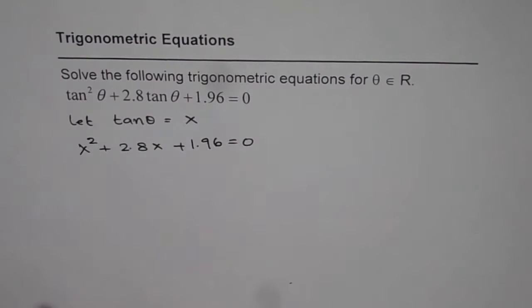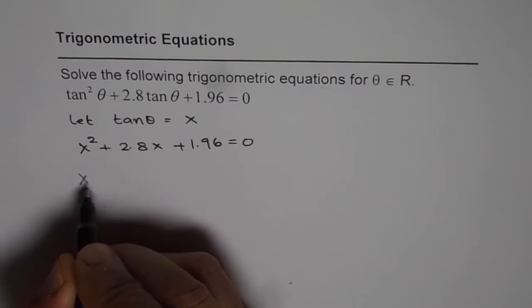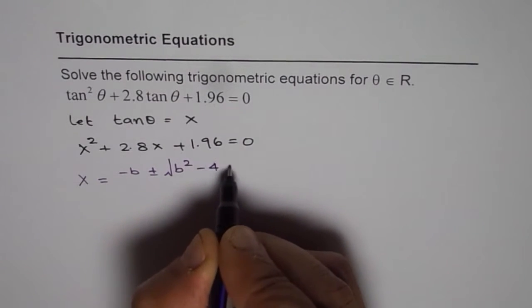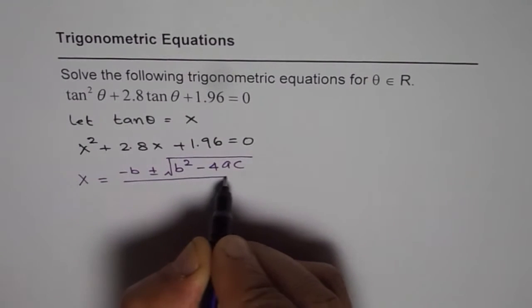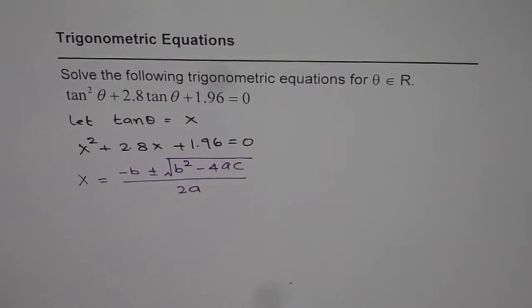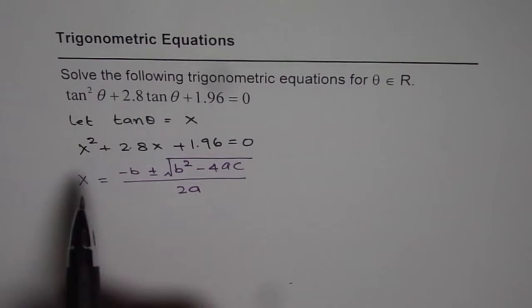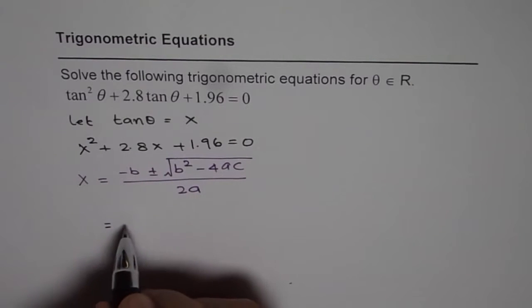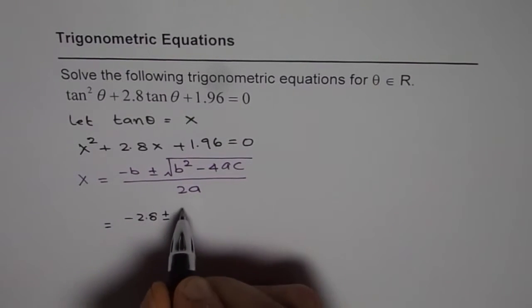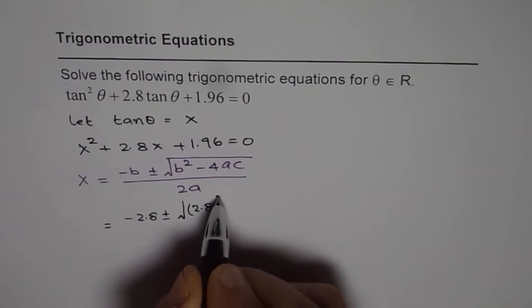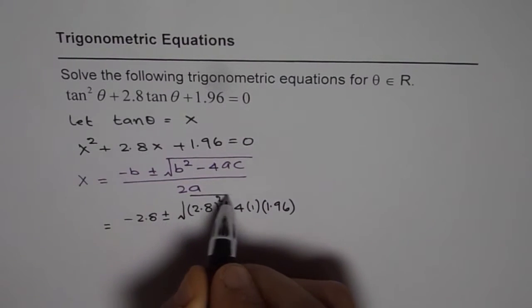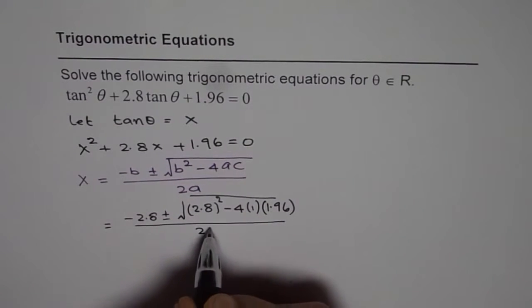Now this is a quadratic equation which we can solve using quadratic formula. The quadratic formula is x equals minus b plus or minus square root of b squared minus 4ac divided by 2a. Now in this, b is 2.8, a is 1 and c is 1.96. Let's substitute the values. So we get minus 2.8 plus minus square root of 2.8 squared minus 4 times a is 1 and c is 1.96 divided by 2 times 1.